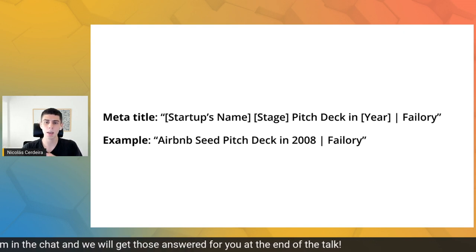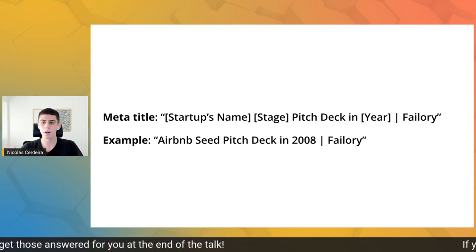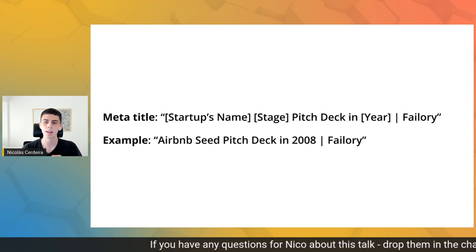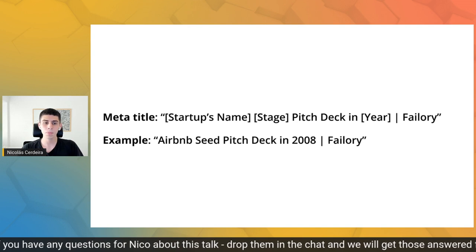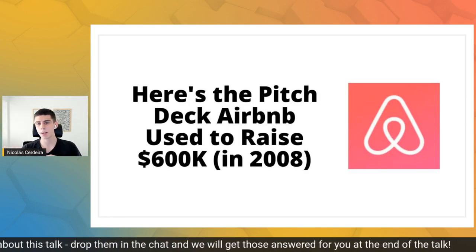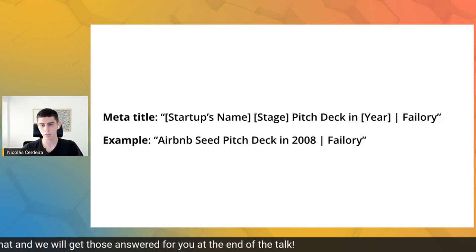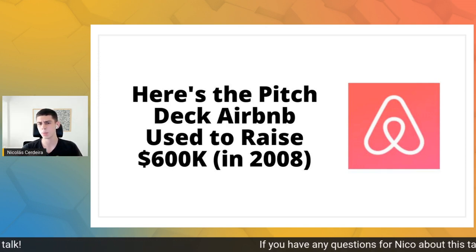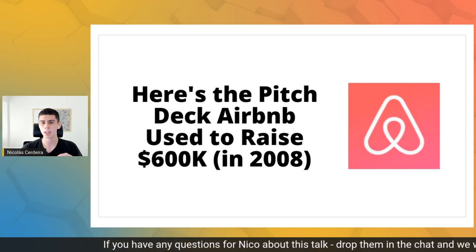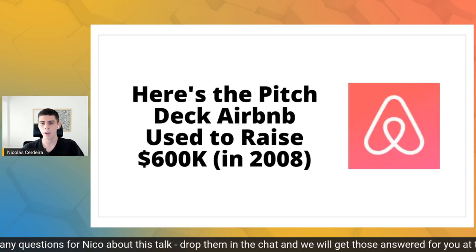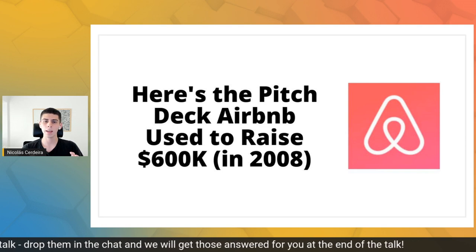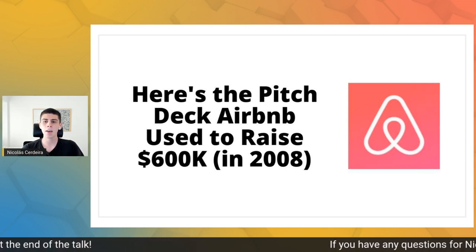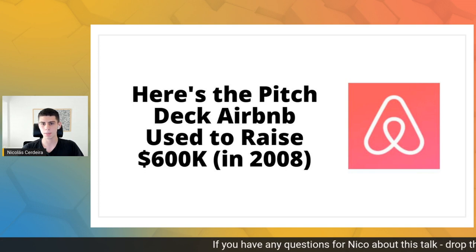We also created a social media sharing title using a similar template — slightly different from the meta title because we felt it made more sense for social sharing purposes. We combined this social media sharing title with the startup's logo using a tool called Placid that allowed us to programmatically create images. Here is the example for Airbnb. Now we had the huge Airtable with all startup info plus meta title, meta description, and social media sharing images.